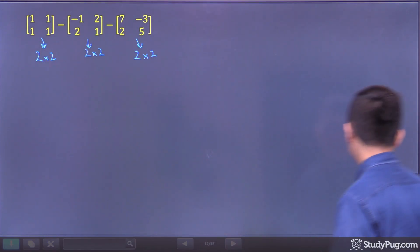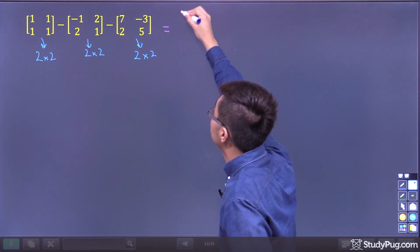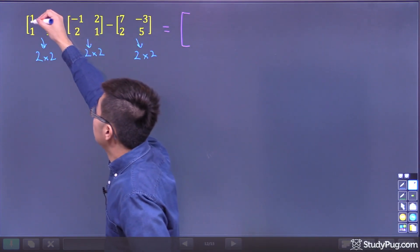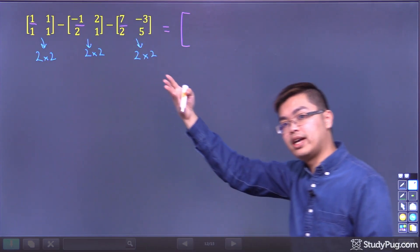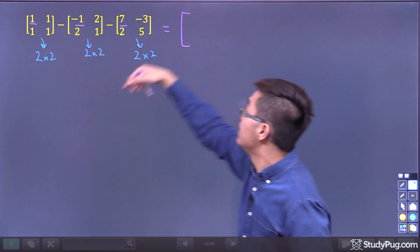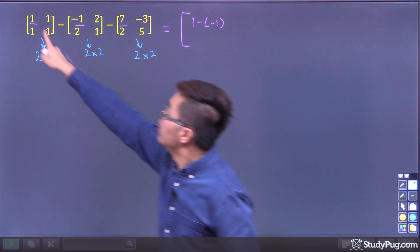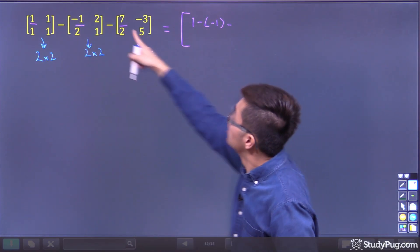So how do we subtract these matrices? Remember that you want to subtract the corresponding entries. Looking at the first entry, we got a 1, we got a negative 1, and a 7. Those are corresponding entries. So here it's actually 1 minus negative 1, 1 minus negative 1 minus 7.